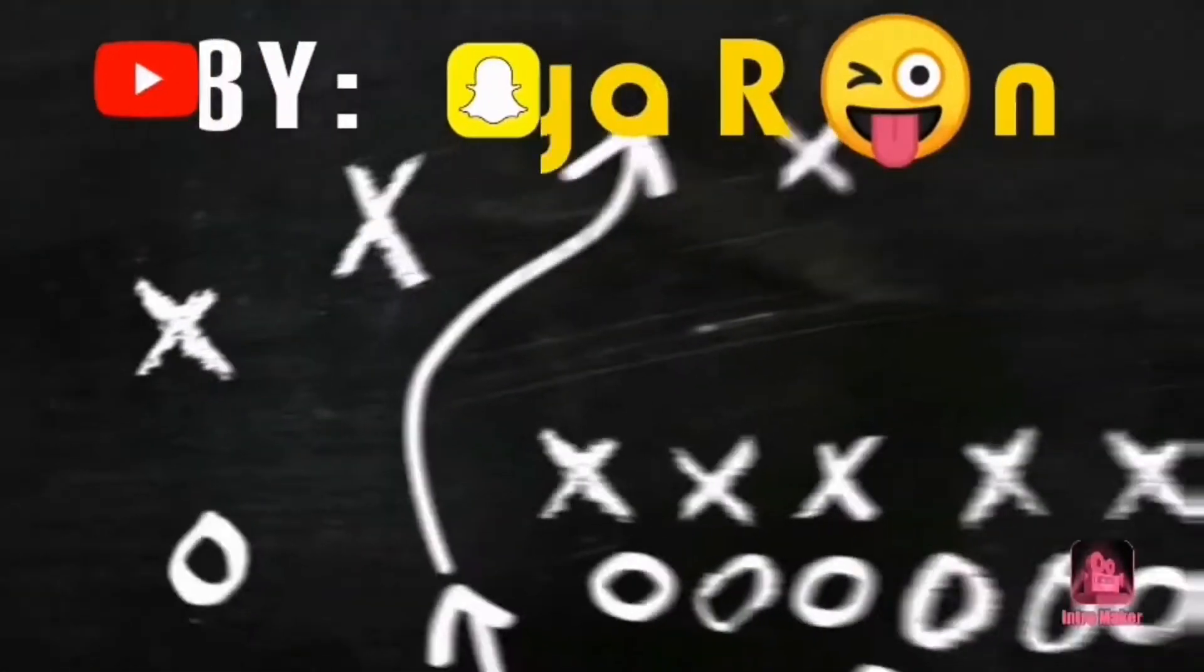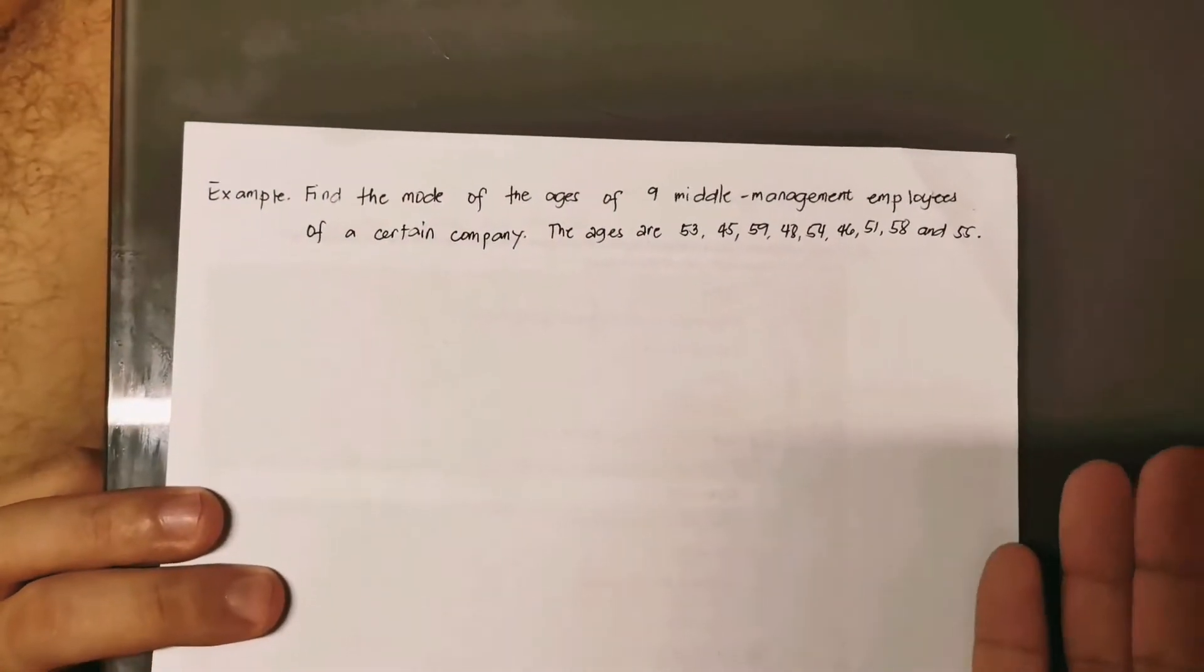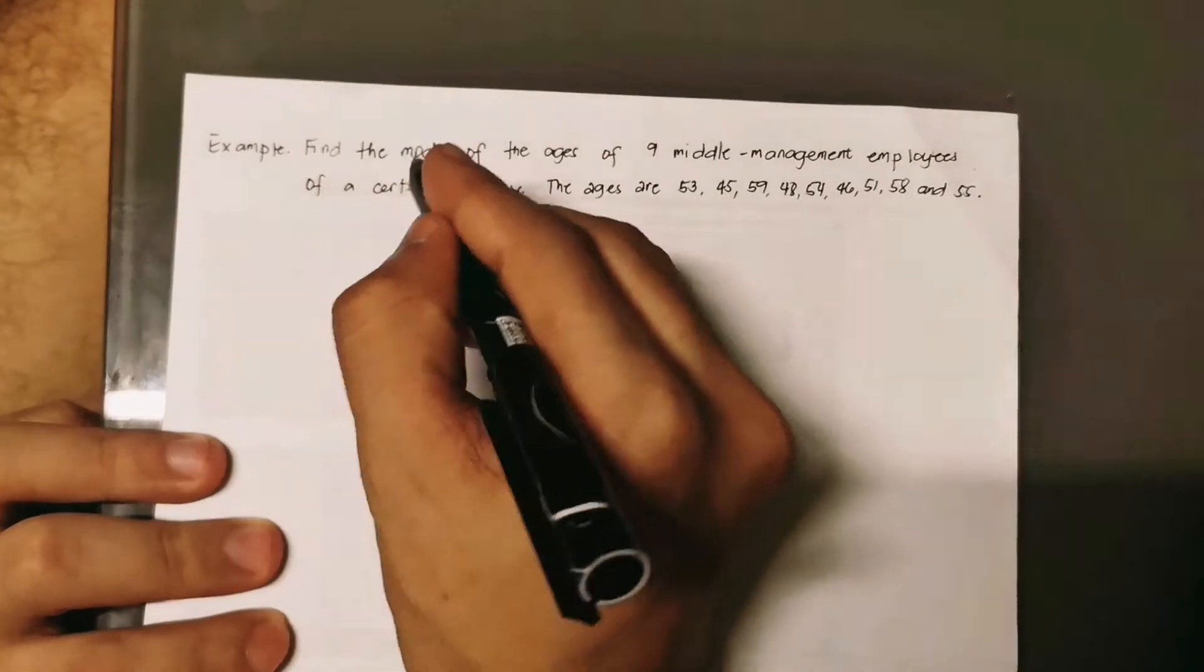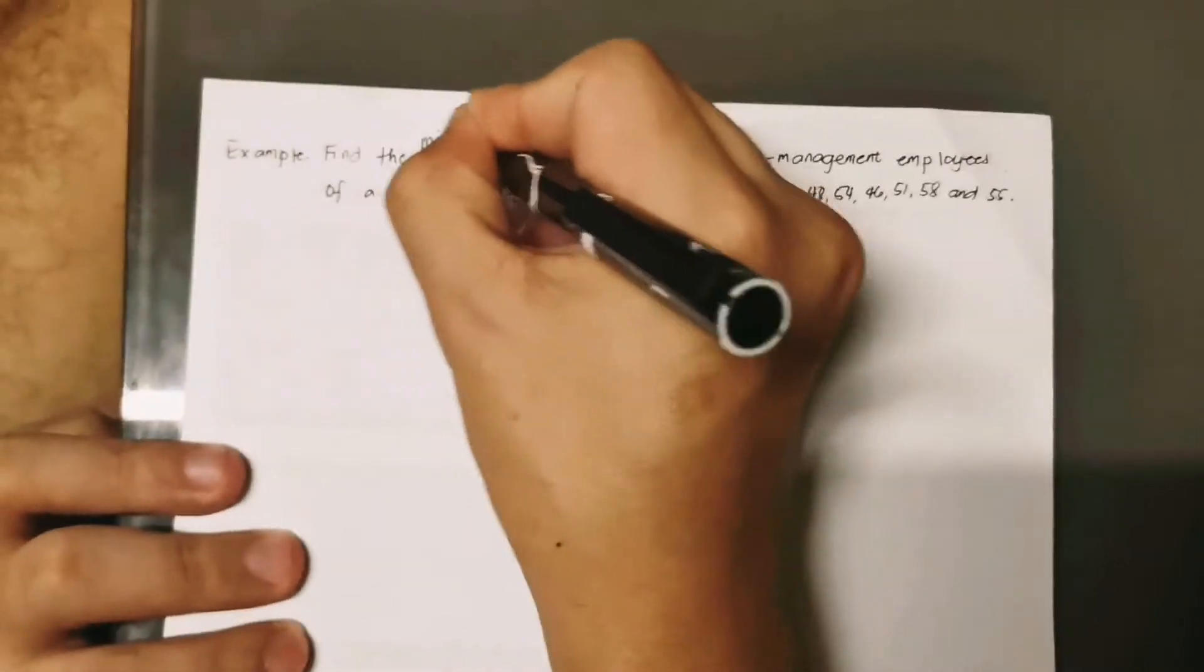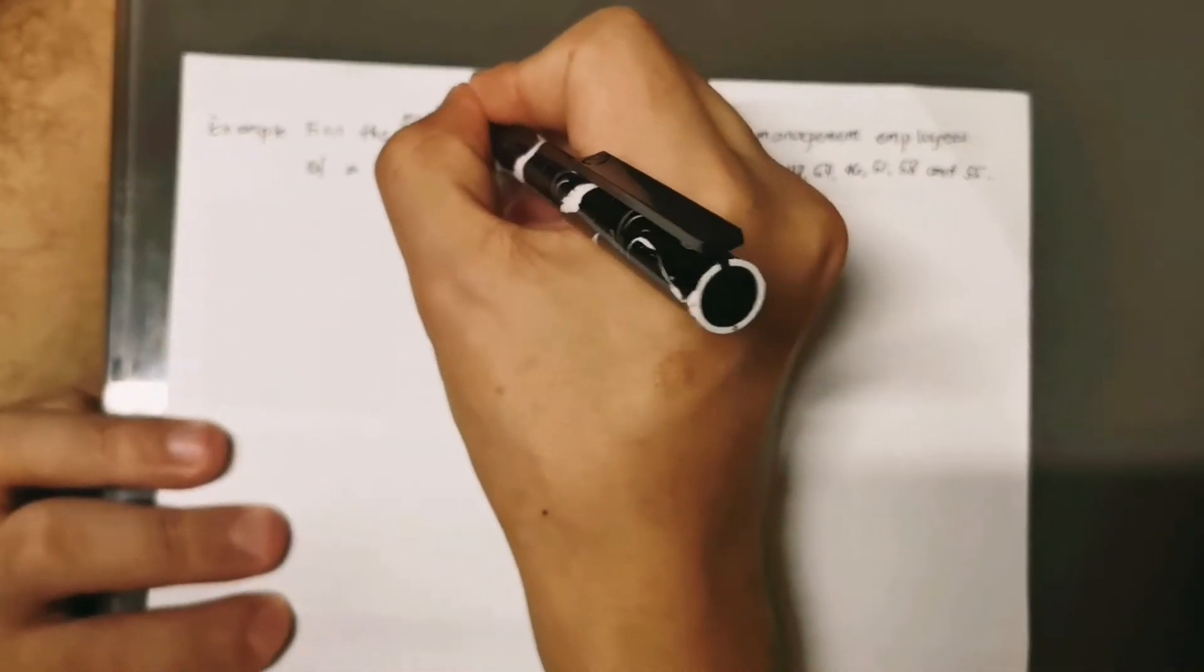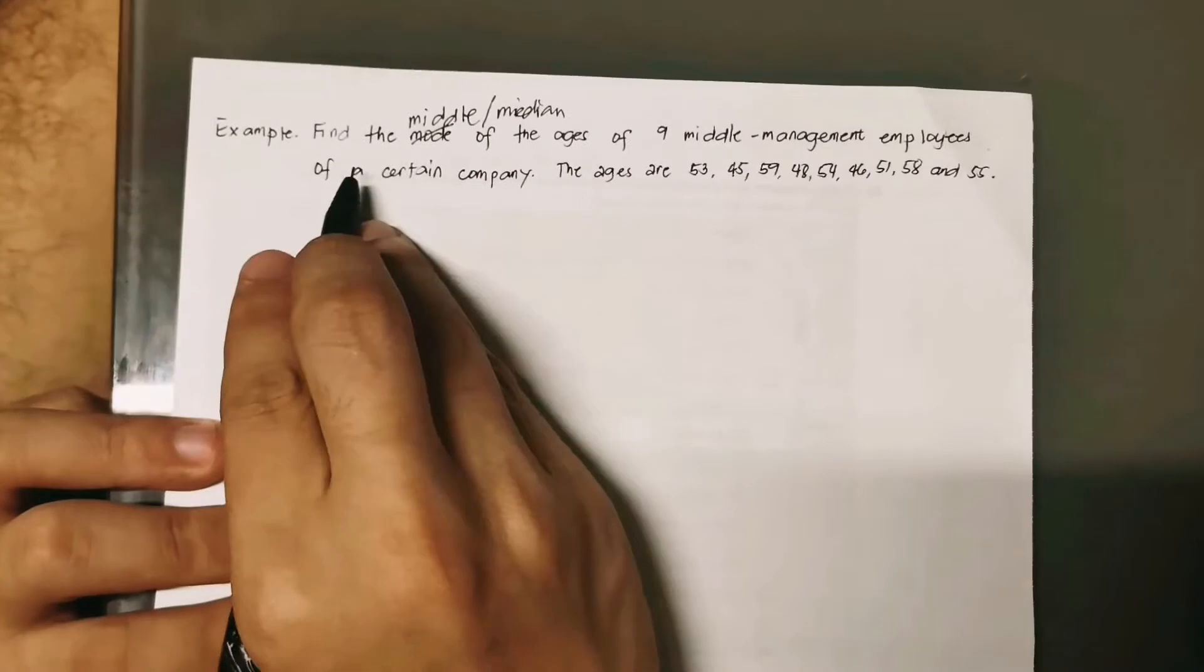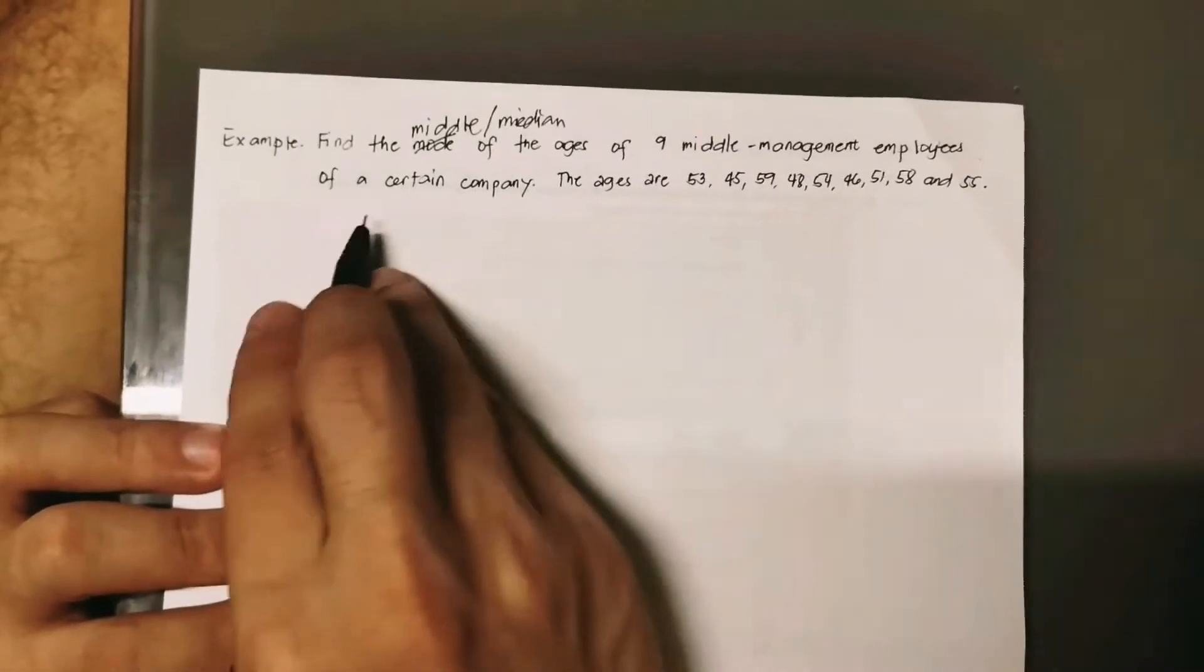So again, let's go and let's solve the median. Welcome to our example for the median. You'll notice this is just a recycled question. I used this one for the mode, let me just change this to median. Find the middle score or median of the ages of nine middle management employees of a certain company.